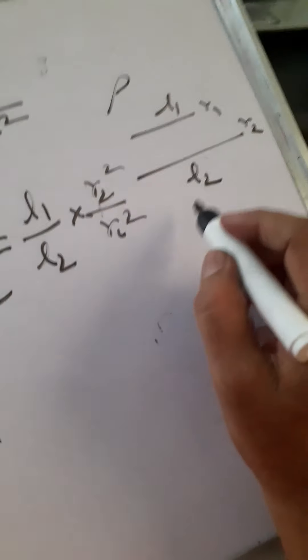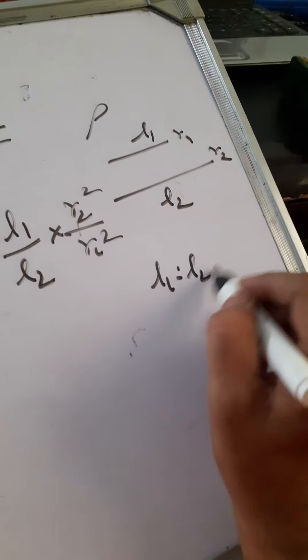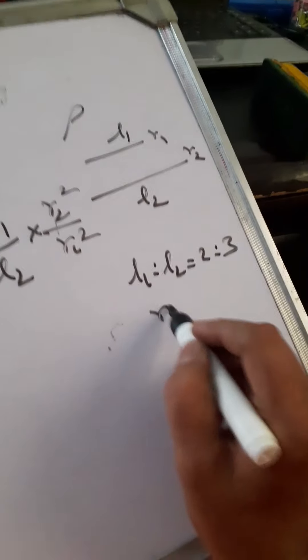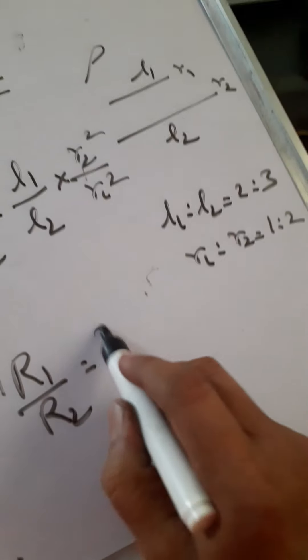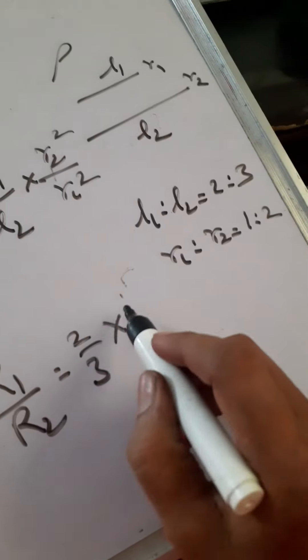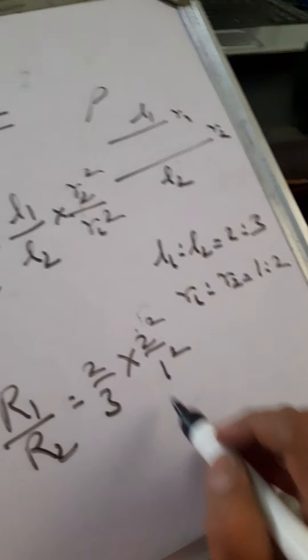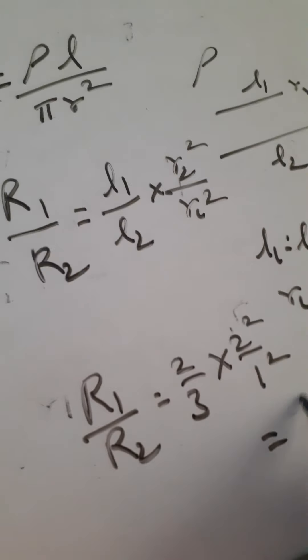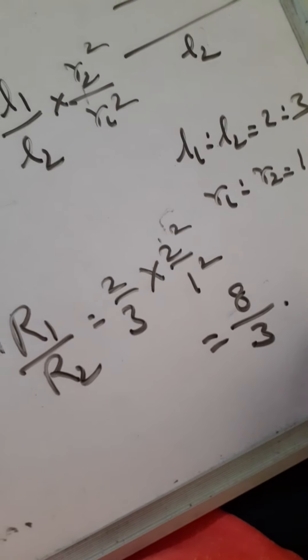Suppose in the problem, the lengths are in the ratio 2 is to 3, radii are in the ratio 1 is to 2. Find the ratio of the resistances. Therefore, R1 by R2 equals 2 by 3 into 2 square by 1 square. We got 8 by 3. So resistances are in the ratio 8 is to 3.